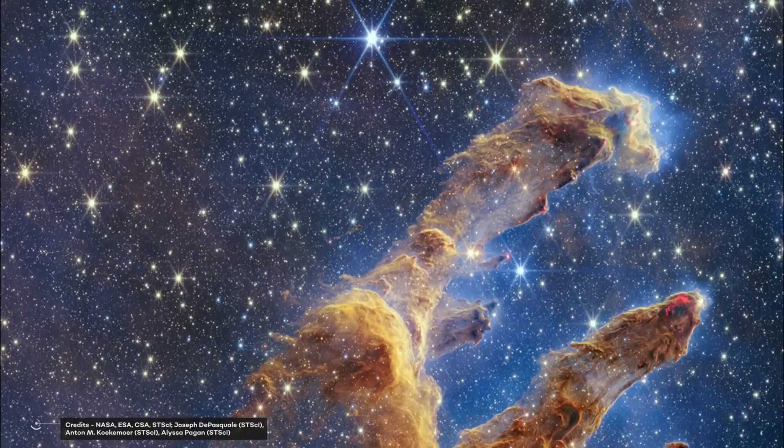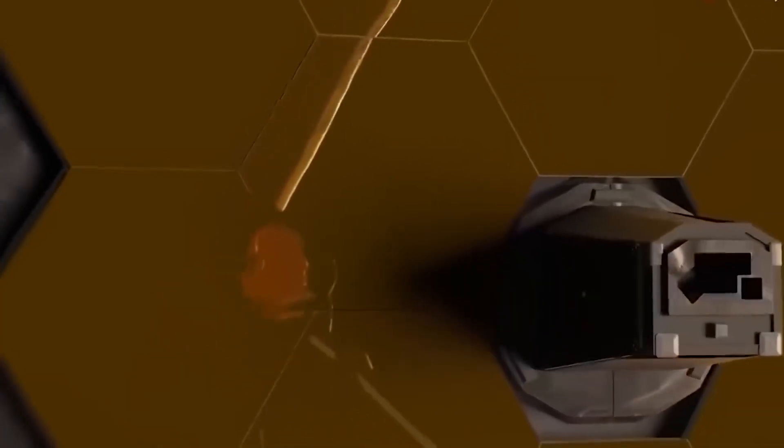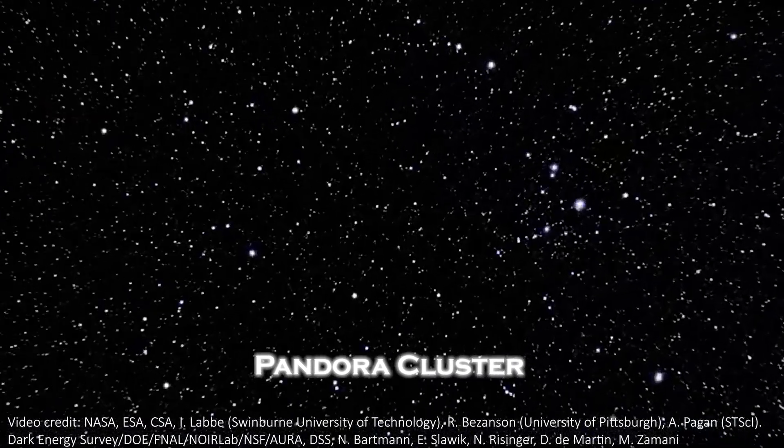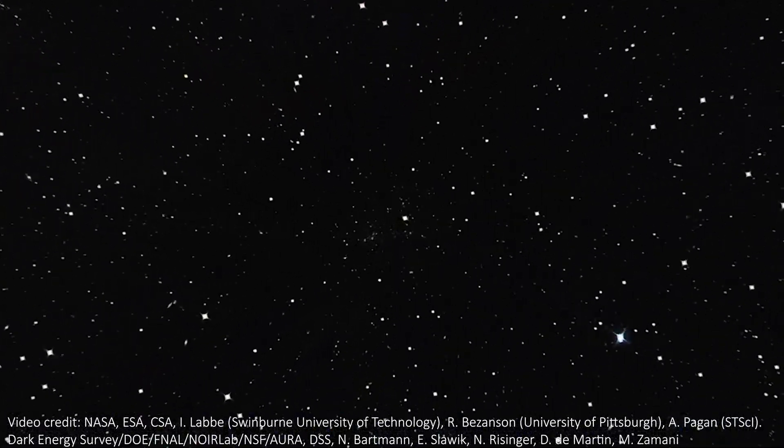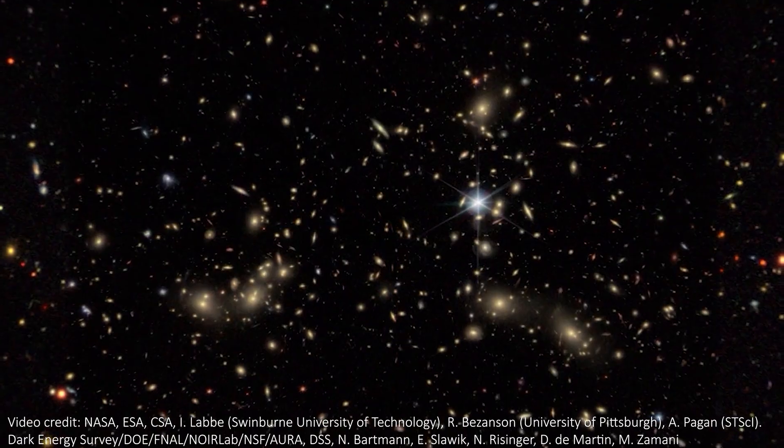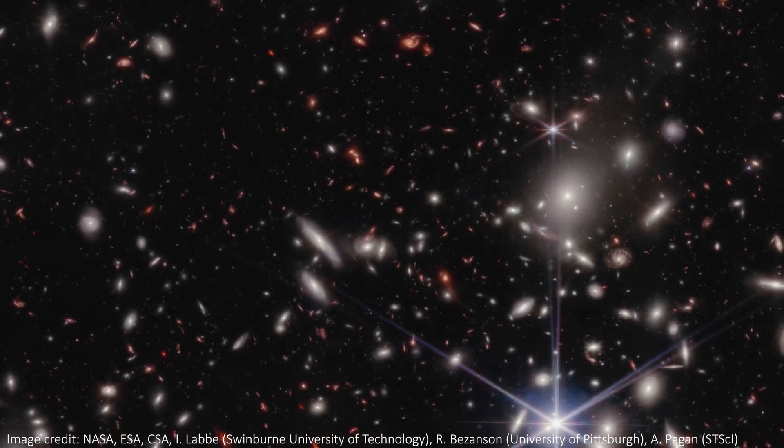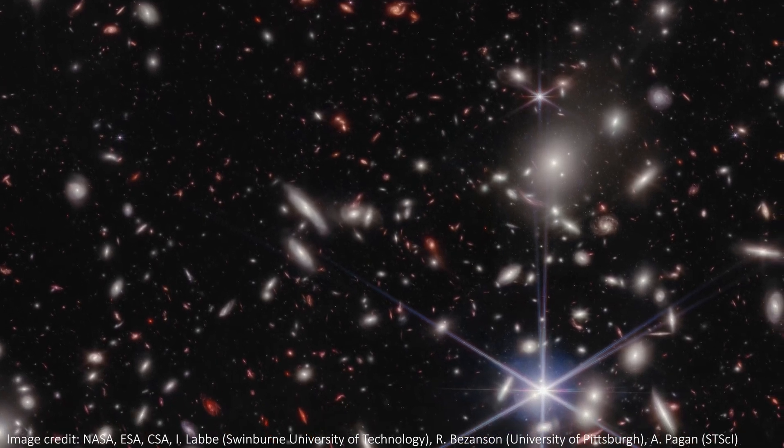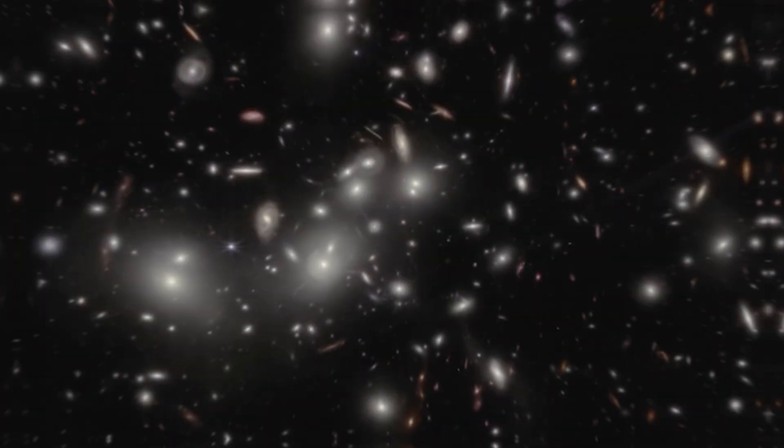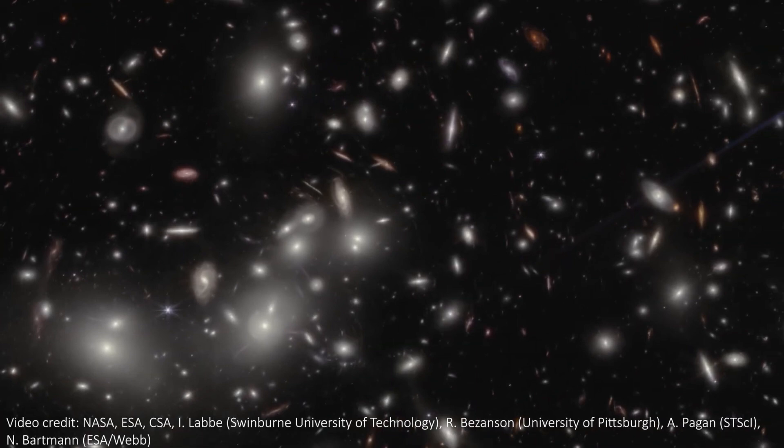After its success with the Pillars of Creation, the James Webb Telescope turned its gaze to the Pandora Cluster, a region of space named after the mythical figure known for her curiosity. And just like Pandora's box, Webb's observations revealed unexpected wonders using Einstein's theory of general relativity.